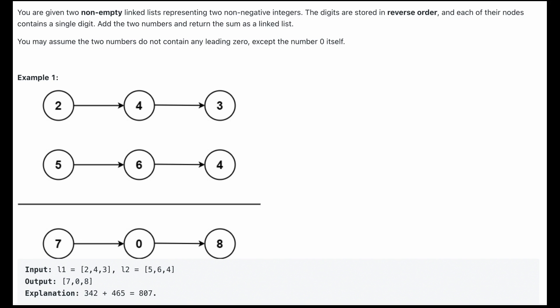You are given two non-empty linked lists representing two non-negative integers. The digits are stored in reverse order, and each of their nodes contains a single digit. Add the two numbers and return the sum as a linked list. You may assume that the two numbers do not contain any leading zeros except the number zero itself.